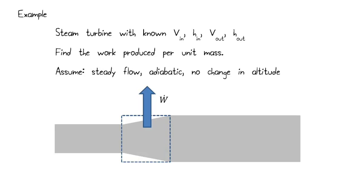So here are the examples that we're going to do in class. One is a steam turbine where we know v in and the enthalpy in, we know v out and the enthalpy out, and we're asked within the turbine to find the work produced per unit mass, assuming steady flow, adiabatic, and no change in altitude. So this problem is similar to things that you probably have done before in thermodynamics.